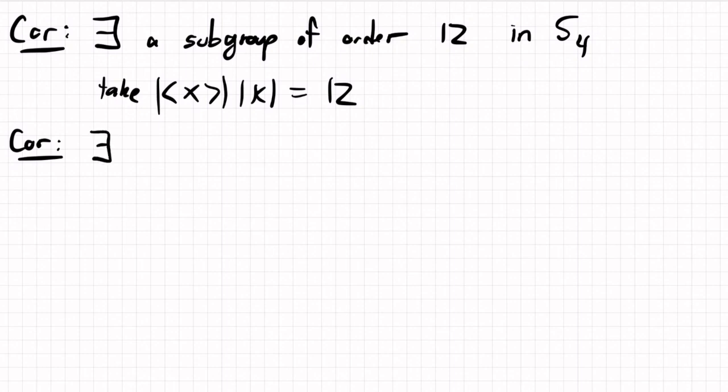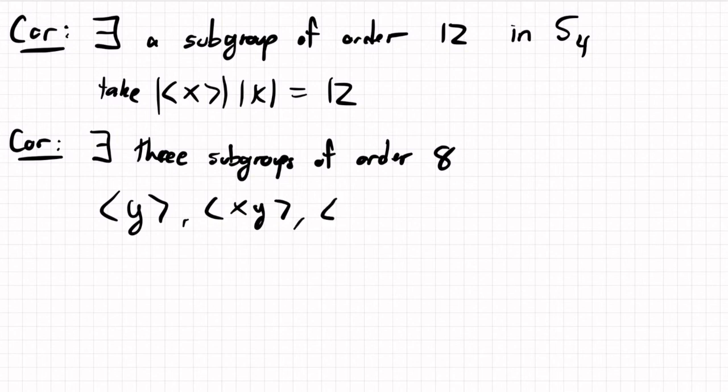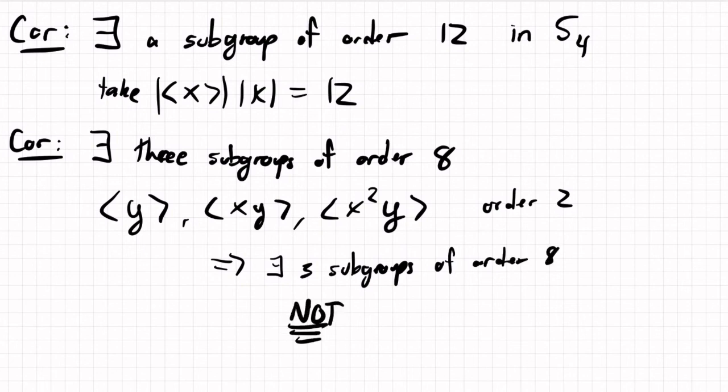And in addition, there exists 3 subgroups of order 8. So these will come from Y, where Y is a reflection, and then XY, and then X squared Y. Each has order 2. So 2 times 4 will be 8, order 8. And these will not be normal because these 3 subgroups are not normal.